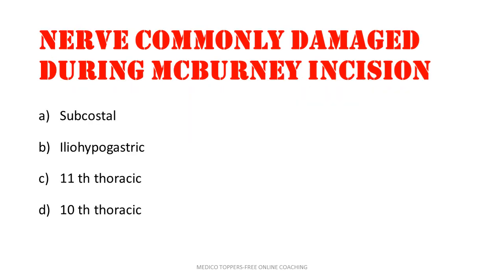The nerve commonly damaged during McBurney's incision — this is one of the most important questions. The options are subcostal, iliohypogastric, lower thoracic, and T10 thoracic. If you are clear with the anatomy, this question is also easy. The answer is iliohypogastric nerve.